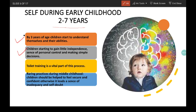Parents must allow the child to make their own decisions. Toilet training is a vital part of this process — learning to control one's bodily functions leads to feelings of control and independence. Children should be helped to feel secure and confident; otherwise it leads to a sense of inadequacy and self-doubt, which affects their self-esteem in later years.